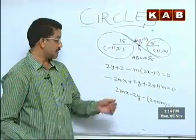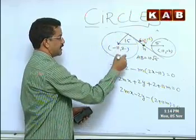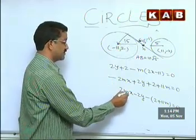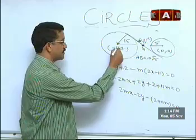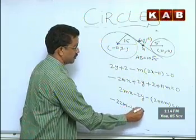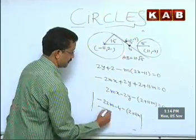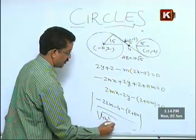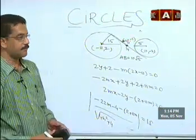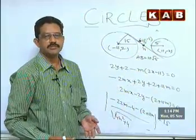Leave the equation and find m using the tangent condition. Since this is a tangent to the circle, the perpendicular distance from the center (-11/2) to the line should equal the radius. So: |−22m − 4 − 2 + 11m| / √(4m² + 4) = 15. Solving this gives two values of m. Substituting back gives the equation of the common tangent.